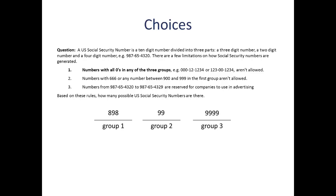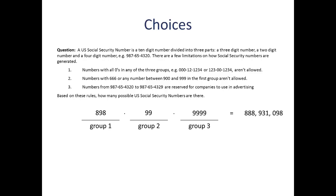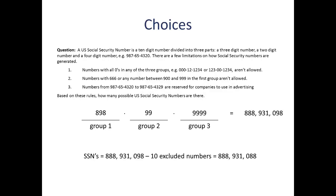Now that we've filled in all of our blanks, the multiplication rule tells us that the total possible numbers so far is 888,931,098. However, we still haven't considered Rule 3, which tells us we can't assign any of the 10 numbers between 987-65-4320 and 987-65-4329. So we take our total of 888,931,098 and subtract those 10 numbers, giving us a final total of 888,931,088 U.S. Social Security numbers.